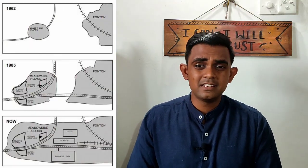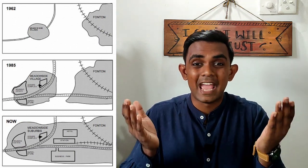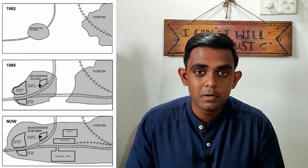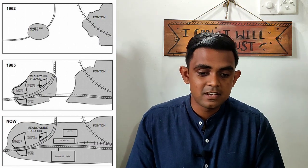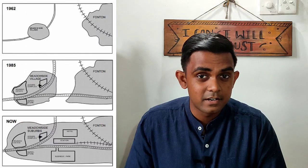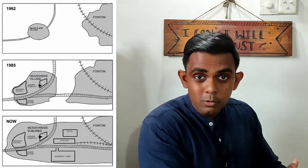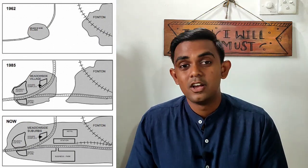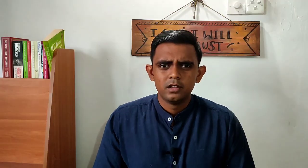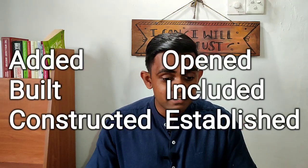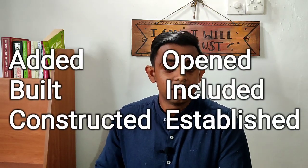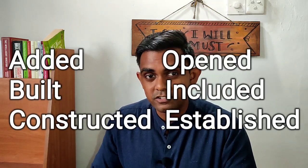Coming back to our question, in 1962, Meadowside Village was virtually empty — there was literally nothing located there. But in 1985, a number of things have been added. If something has been included or added newly, then we can use a specific set of vocabulary: built, added, constructed, opened, included, or established. Any of these words can be used to show if something has been added that was not there before.